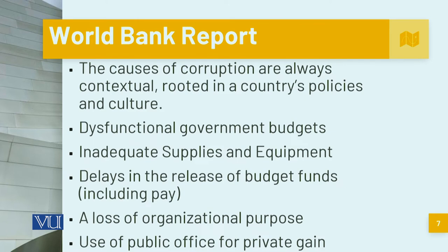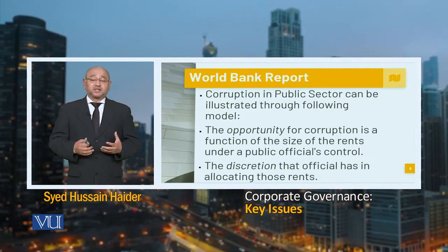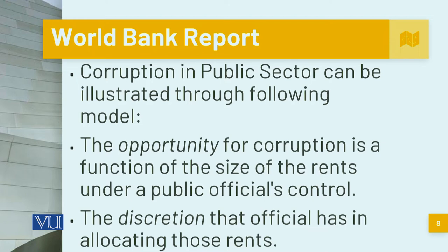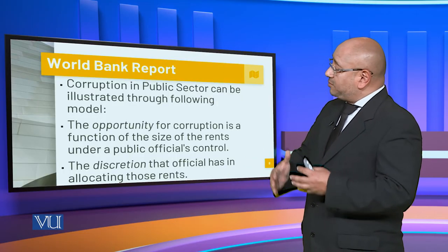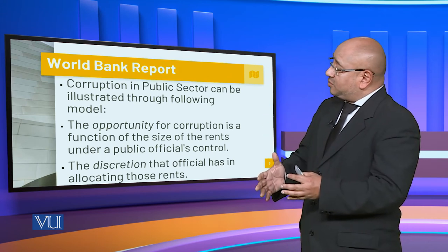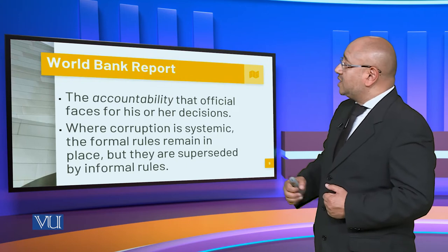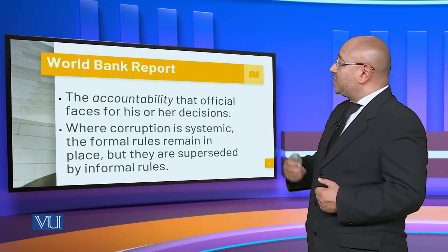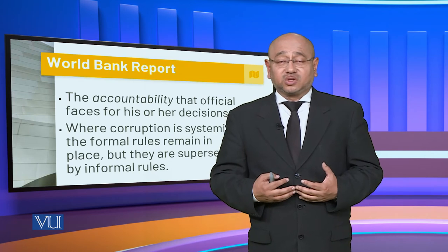The World Bank tends to oversee how all of this can be curbed, especially corruption in the public sector. The opportunity for corruption is a function of the size of the rents under a public official's control and the discretion that official has in allocating those funds. We see a two-tier corrupt system — first on allocation, then during disbursement. Where corruption is systemic, formal rules remain in place but are superseded by informal rules, which unfortunately promote institutional corruption.